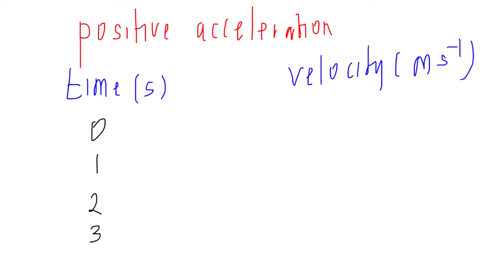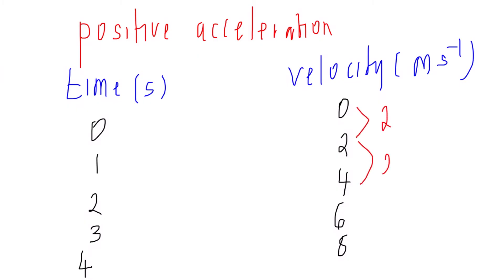Time is in seconds: 0, 1, 2, 3. The velocity is in meters per second: 0, 2, 4, 6, 8. This is constant acceleration. The velocity increases by 2 meters per second every second, so the acceleration is constant at 2 meters per second squared.